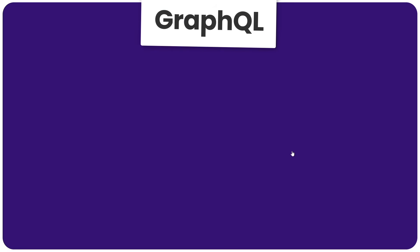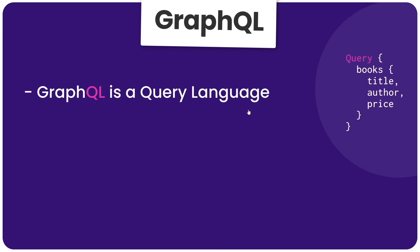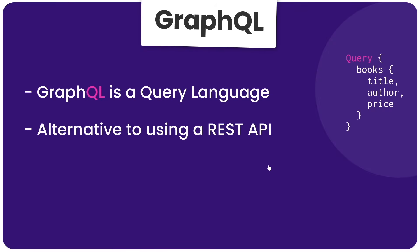Let's get started by talking about exactly what GraphQL is and why we'd want to use it. GraphQL is what's known as a query language — that's what the QL in the name stands for. And by query language, we mean a specific syntax that we can use to query a server to request or mutate data.